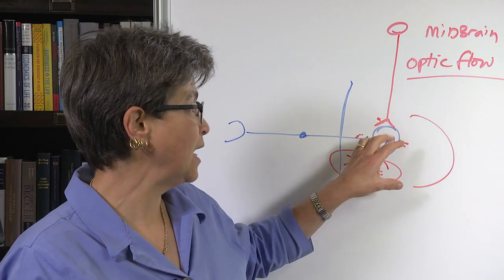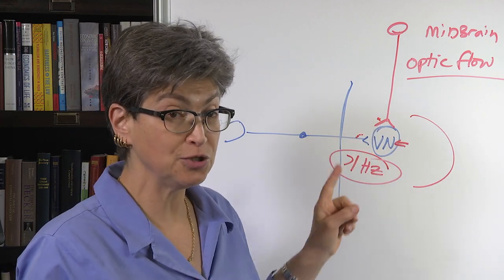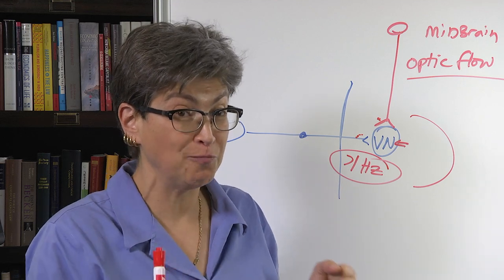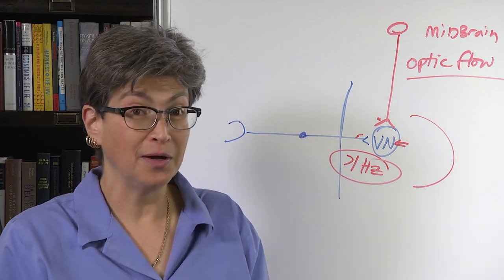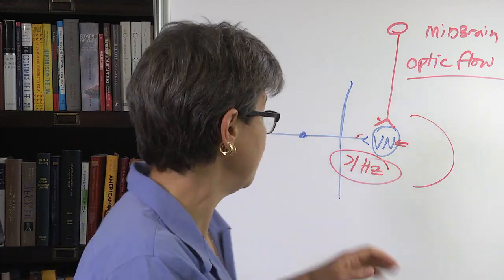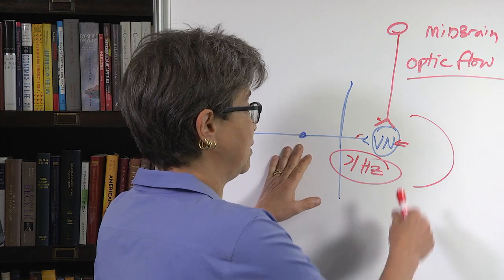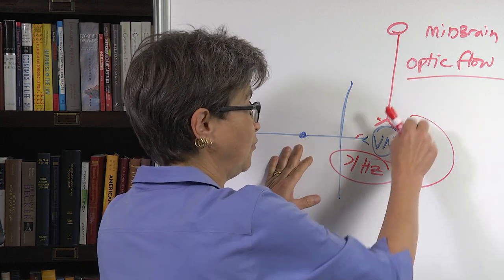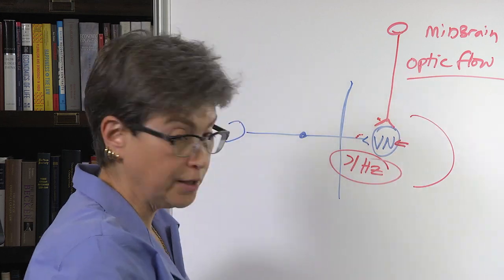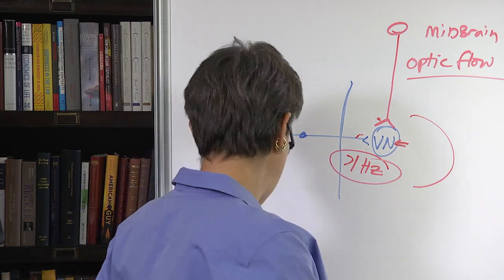The fact that we cannot tell, distinguish between these two different inputs tells you that vision is very important and it can trump what we're getting from the vestibular system. So the vestibular system may not be giving us anything, the vestibular apparatus may not be giving us anything, if we see the optic flow, we can figure out how our head is moving in space.